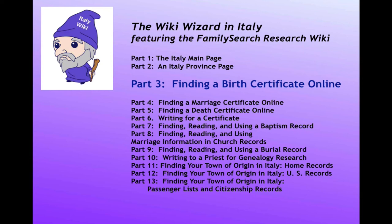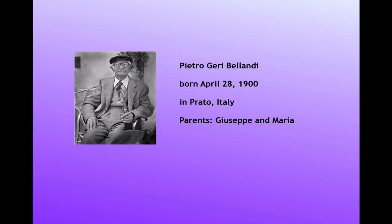This is the third lesson in the series intended to help you learn how to find records for your Italian ancestors using the FamilySearch Research Wiki. I'm going to take you through a case study where we look for the birth certificate of Pietro Geri Bellondi, who was born April 28, 1900, in Prato, Italy, and his parents were Giuseppe and Maria.